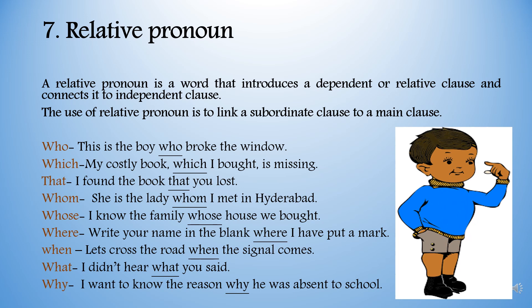Relative pronoun. A relative pronoun is a word that introduces a dependent or relative clause and connects it to an independent clause. Relative pronouns: who, which, that, whom, whose, where, when, what, and why. Examples: This is the boy who broke the window. My costly book, which I bought, is missing. I found the book that you lost. She is the lady whom I met in Hyderabad. I know the family whose house we bought. Write your name in the blank where I have put a mark. Let's cross the road when the signal comes. I didn't hear what you said. I want to know the reason why he was absent from school.